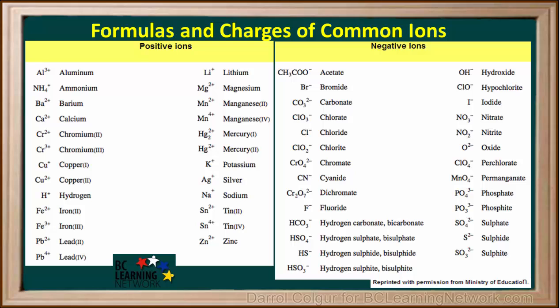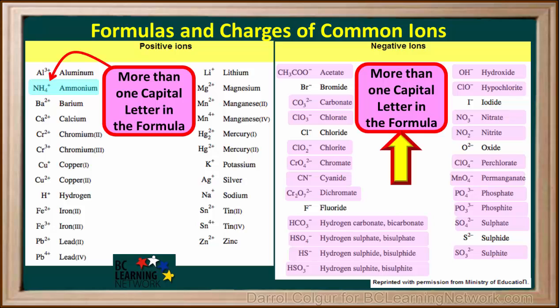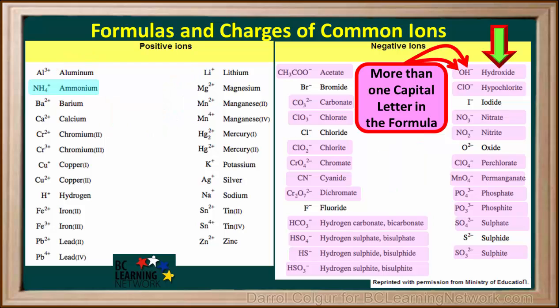Here is a table that contains the formulas and charges of the ions we'll be using in this course. The polyatomic ions are the ones with more than one element — in this table, they are shaded. The other ions are not polyatomic; they are ions of single elements. Polyatomic ions are easy to recognize because the formula always has more than one capital letter. For example, the hydroxide ion is polyatomic because it has a capital O and a capital H.